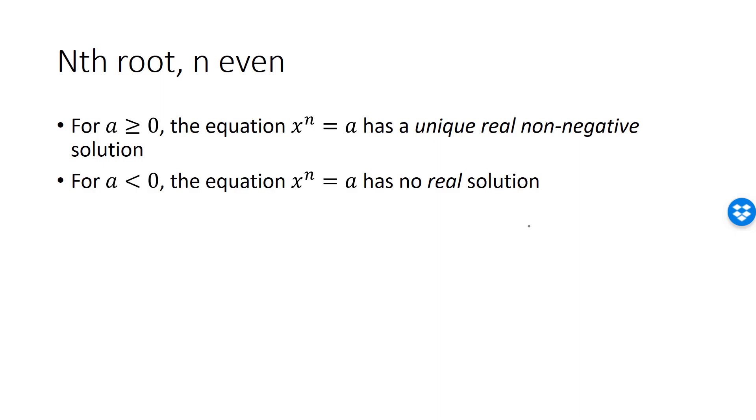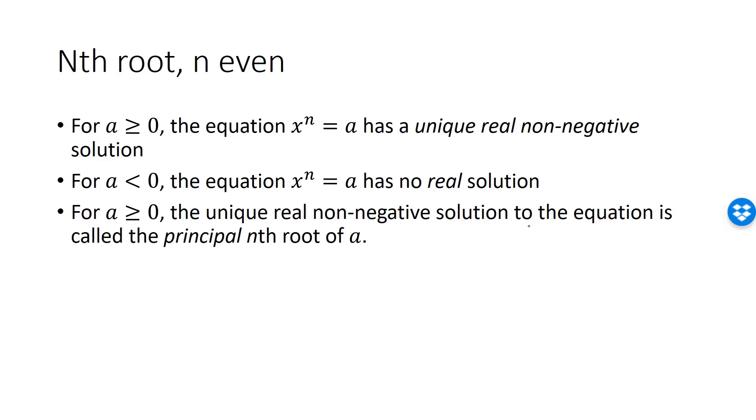If n is even, as in the case of the square root, then we have the following results. If a is a non-negative number, then the equation has a unique real non-negative solution. If a is negative, then the equation has no real solution. For a ≥ 0, the unique real non-negative solution is called the principal nth root of a.